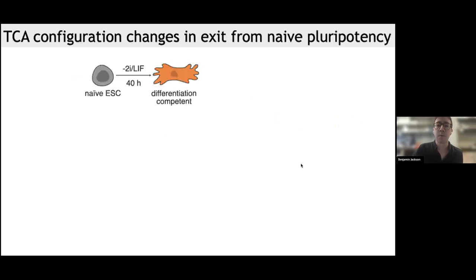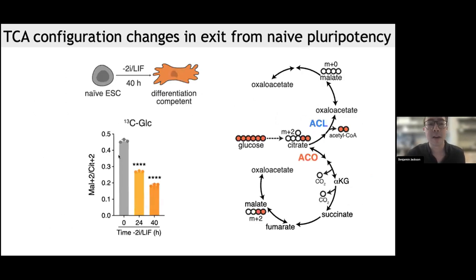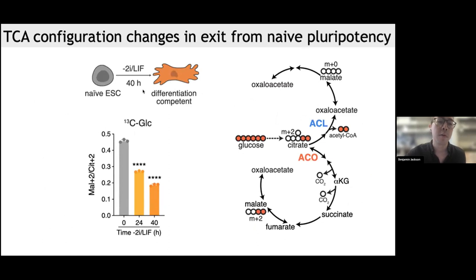We used this system to look at TCA cycle configuration. Quite nicely, naive cells look a lot like the myotubes we had observed — they have a really high malate+2 to citrate+2 ratio indicative of the canonical TCA cycle. When we withdraw 2i and LIF, you can see a decrease in this ratio, indicating that as the cells differentiate, they begin to rely more on the non-canonical TCA cycle anchored by ACLY.